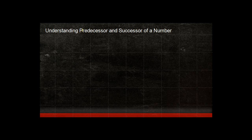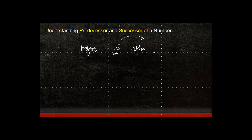In this video we will understand about the predecessor and successor of a number. Let's take any natural number — for example, 15. Every natural number will normally have a number after it. If I talk about 15, the number which comes after 15 is 16.